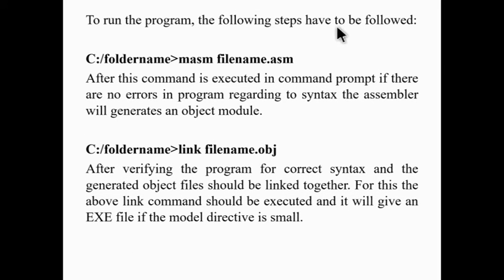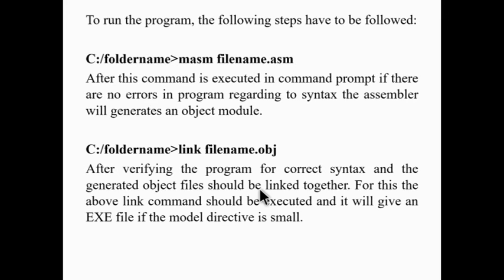To run the program, follow these steps. First, execute: masm [filename].asm — where filename is where the program is written. Then: link [filename].obj — after verifying the program for correct syntax, the generated object file should be linked together. The link command will produce an .exe file if the model directive is small.